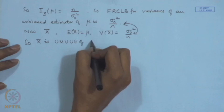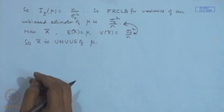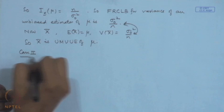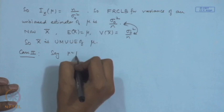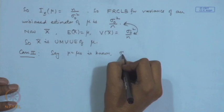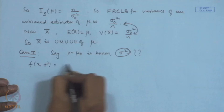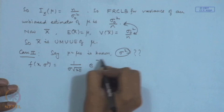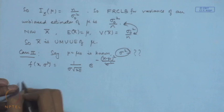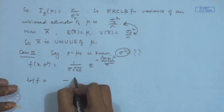Now let us take another case: μ is known (μ = μ₀) and we want to estimate σ². The density function written as a function of σ² is (1/(σ√(2π))) × e^(−(x−μ)²/(2σ²)). So log f = −(1/2)log σ² − (1/2)log(2π) − (x−μ)²/(2σ²).